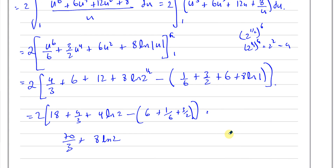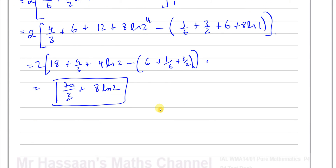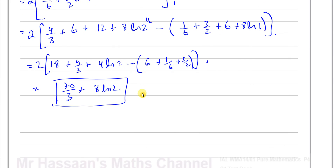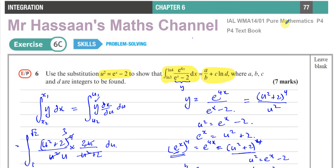We have to write it in exact form and identify the integers. The answer is in the form a/b + c ln d, where a = 70, b = 3, c = 8, and d = 2. That's the answer to question 6 from exercise 6C, chapter 6, P4 IAL textbook. Other integration by substitution questions can be found in the playlist linked below. Subscribe to my channel — thank you for watching and see you soon.